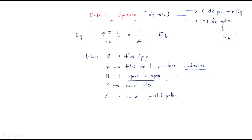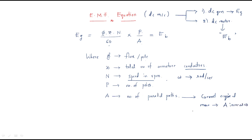N is the speed in RPM — we also have Omega which is speed in radians per second. P is the number of poles. A is the number of parallel paths. The number of parallel paths depends on the current requirement: if more current is required, the value of A increases, and if higher voltage is required, A decreases.